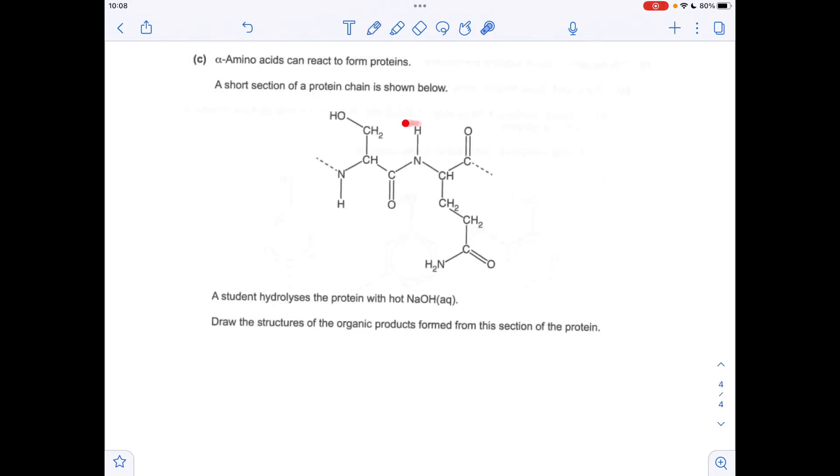And finally, part C, we've got this section of protein. The dotted lines here just show that this thing repeats. So it's hydrolyzed with hot aqueous sodium hydroxide. So the bonds that are going to break are all the amide bonds or the peptide bonds, we should call them if it's a protein. Remember the peptide bond is the C=O to the N, so we've got one there, we've got one here.